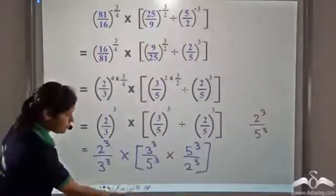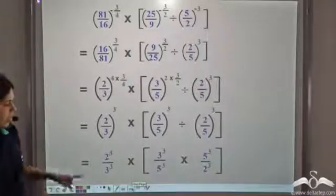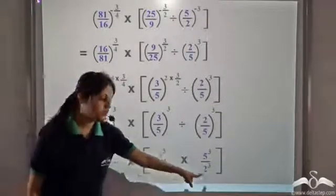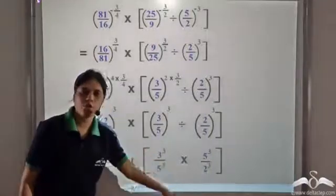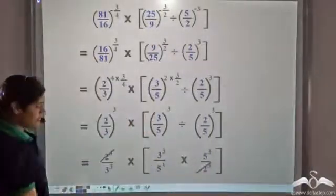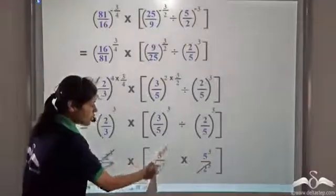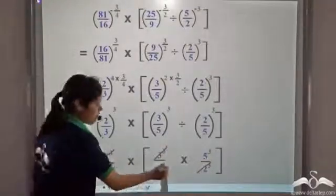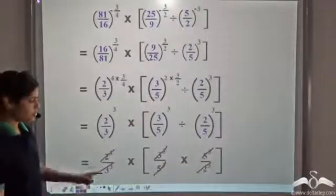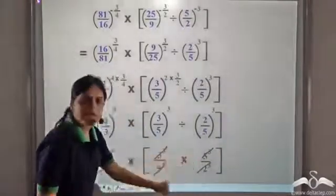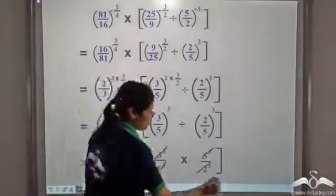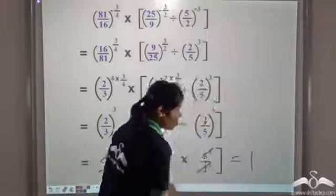This is what we have. We have 2 cubed in the numerator and 2 cubed in the denominator — those cancel. We have 3 cubed and 3 cubed — those cancel. We have 5 cubed in the denominator and 5 cubed in the numerator — those cancel. So this is 1 times 1 times 1, and the solution is equal to 1.